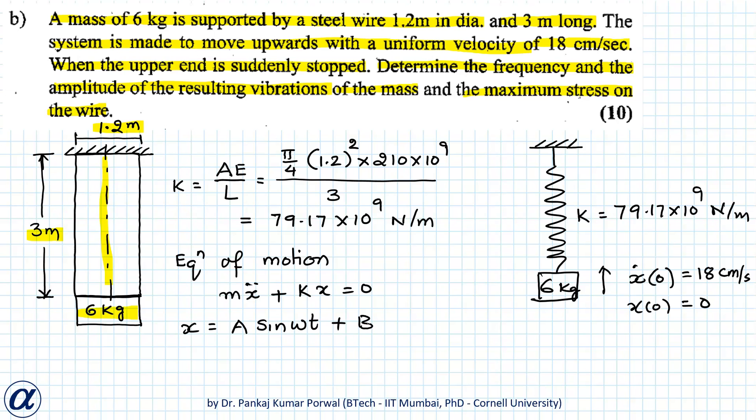Here ω is frequency of the system and that is equals to square root k by m. That is equals to 79.17 into 10 to the power 9 divided by 6...